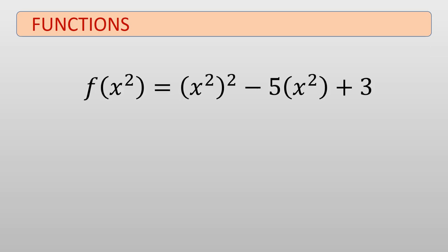Finally, f of x squared equals x squared minus 5 times x squared plus 3, which simplifies to x to the 4th minus 5x squared plus 3.